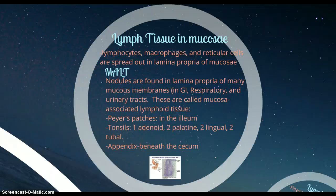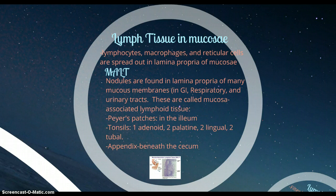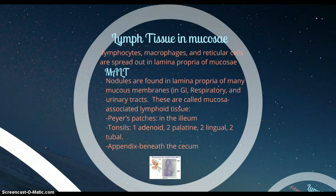MALT has nodules — areas where white blood cells and lymphatic cells will congregate. They're also called follicles, and I'll be referring to them as follicles more from now on. They're also found in the lamina propria of many mucous membranes, but their cells are spread in a distinct, discrete manner. And they're found in more places — the GI, respiratory, and urinary tracts. They're put in places strategically that pathogens would enter. MALT stands for mucosa-associated lymphoid tissue.